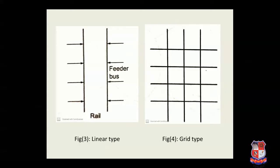Now, figure three and four show the linear and grid type of urban form. In the linear type, the figure shows the main traffic corridor along the length with feeder routes by bus. This type of urban form is also known as ribbon development, characterized by concentration of development along both sides of a major transportation route, such as a road or navigable river. Mumbai city is an example of this type of urban form.